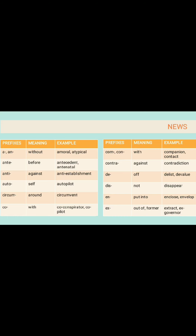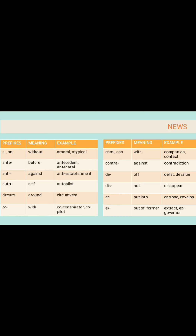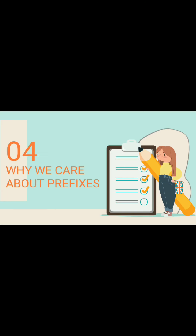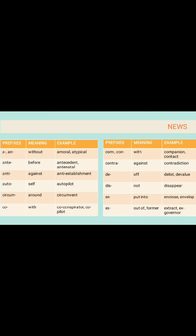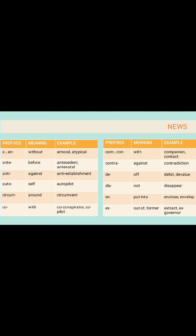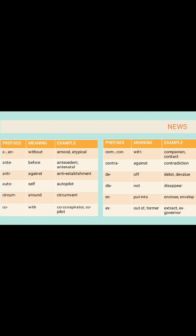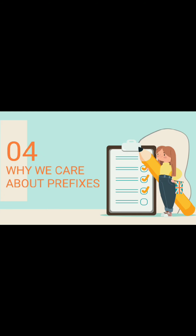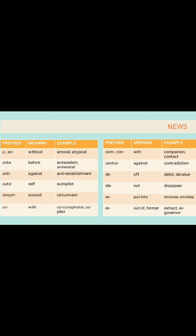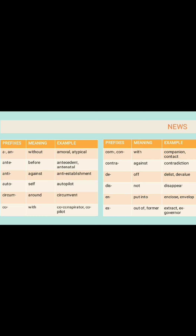'A' or 'an' meaning 'without'. Example: amoral, atypical. 'Ante' meaning 'before'. Example: antenatal. 'Anti' meaning 'against'. Example: anti-establishment. 'Auto' meaning 'self'. Example: autopilot. 'Circum' meaning 'around'. Example: circumvent. And many more — we can see more examples from this table.